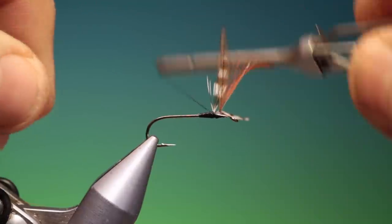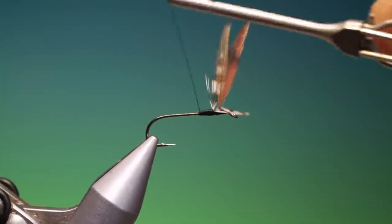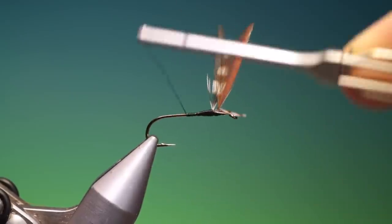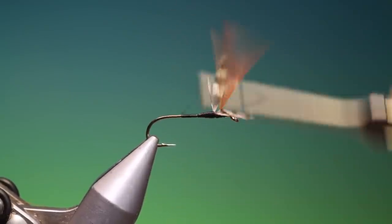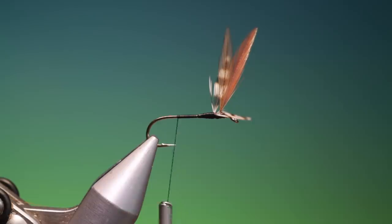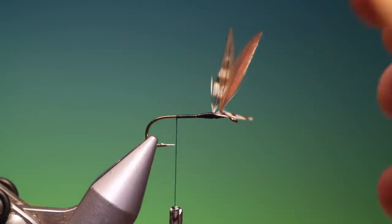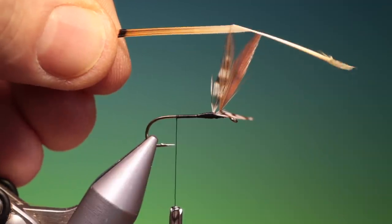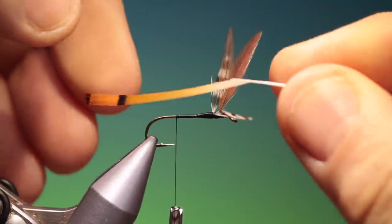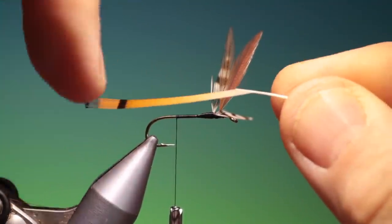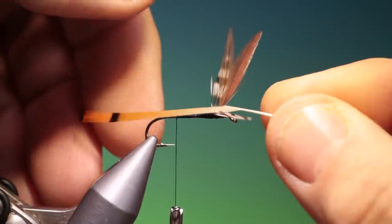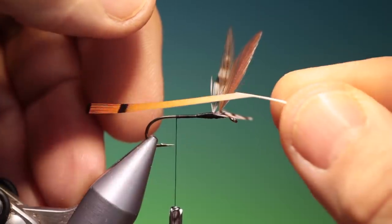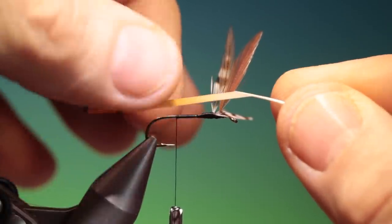Very good. And then we'll go back to there. Then what we want is the tail. Now the best way to do this is to keep it on the stem, just the amount that you need. This keeps all the points together and makes it much easier to handle so they don't turn over when you tie them in.